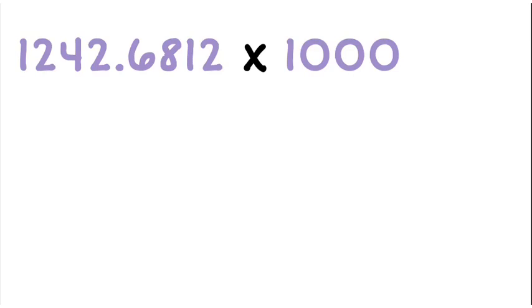So what if I'm multiplying by 1000? With 1000 we've got 1, 2, 3 zeros. That means this decimal point here, I want to move 1, 2, 3 spaces to the right.